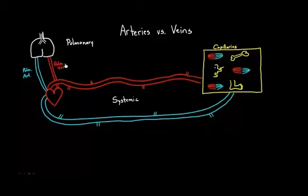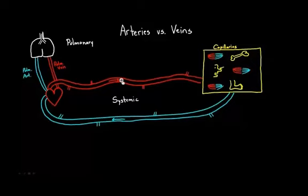I'll get back to why I drew the pulmonary artery in blue and pulmonary vein in red in just one second. Let's get into exactly how to think about arteries and veins in general. I think of arteries as taking blood away from the heart — that's probably the easiest and most clear way of figuring out what an artery is. So arteries take blood away from the heart, and veins are bringing blood back. This becomes our first point — point number one — the direction of flow. Even looking at the pulmonary system, the arteries are taking blood away and the vein is bringing blood back.